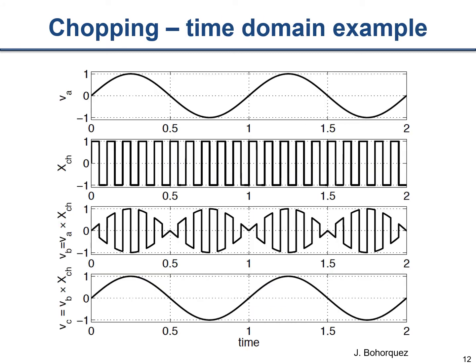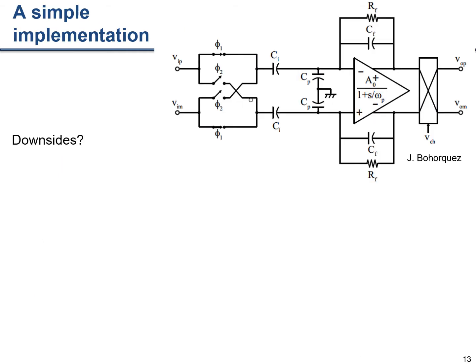Depicted in the waveforms: we have input sinusoid V_a, multiplied by the ±1 chopping waveform to produce a chopped signal. This chopped signal retains characteristics of both the original sine and the square wave. Multiplying the chopped signal again by the same square wave and then low-pass filtering recovers the original signal — exactly what we need to up-convert and then recover the signal.